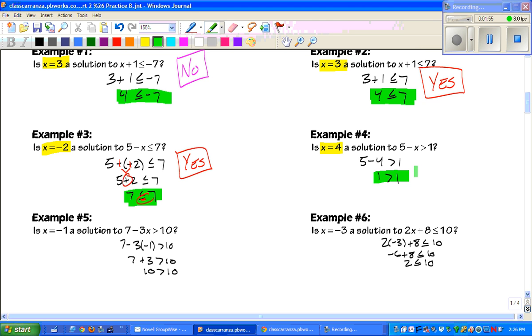Now, number four, you get 1 is greater than 1. No. One is not greater than one. That's saying like I am older than myself right now. You can't have that. Same with number five. 10 is greater than 10. Nope, can't happen. And then the last one, 2 less than or equal to 10. That is a true statement. So, yes, it is a solution.